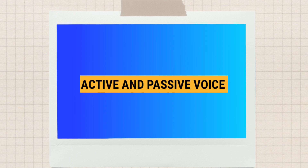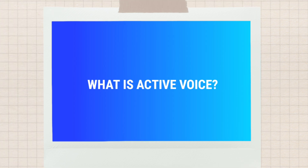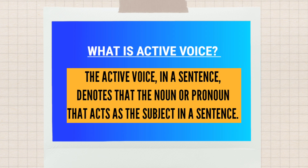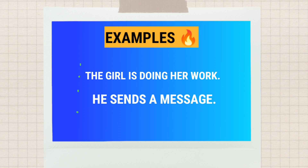First, we shall know what is active voice. In a sentence, active voice denotes that a noun or pronoun acts as a subject. For example, 'The girl is doing her walk' and 'He sends a message.' In those two sentences written in active voice, the noun and pronoun — the girl and he — are working as subjects.